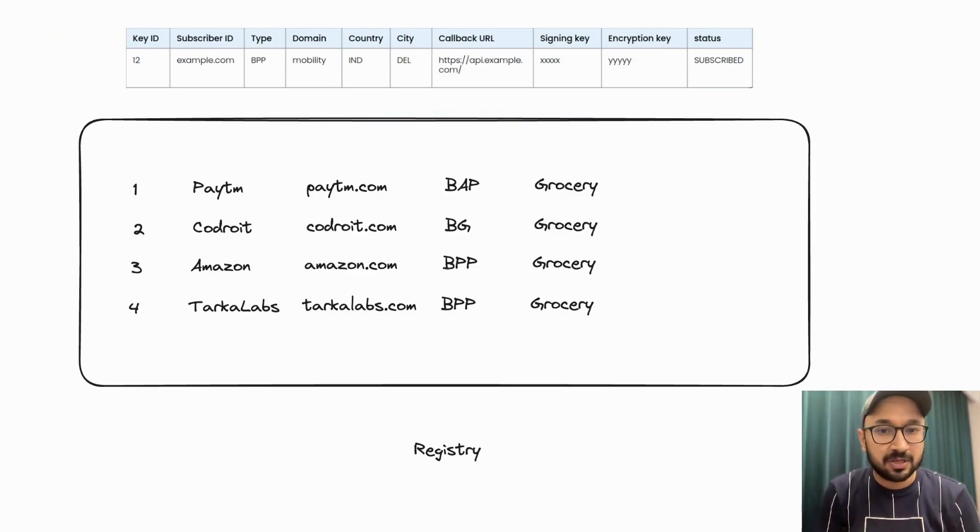Registry is the first piece of the puzzle. The role of the registry is to keep track of who are the participants in the network. As a participant, you can act as a seller platform, a buyer platform, or a gateway. In case of ONDC, the registry is managed by a not-for-profit body called ONDC that is governed by a board of directors. ONDC makes sure that the right participants join the network and comply by the rules of the network.